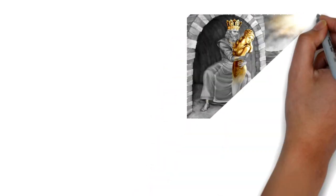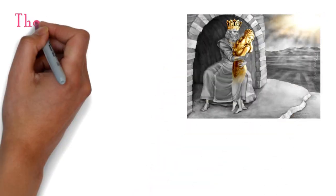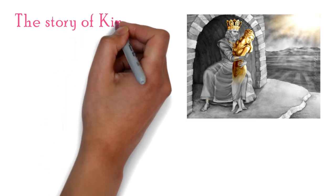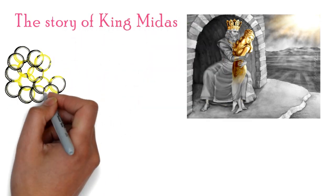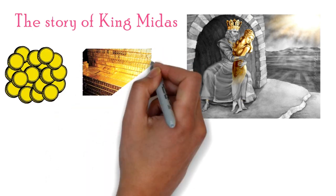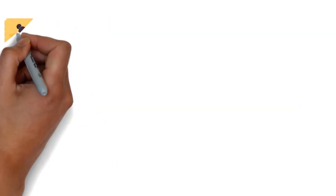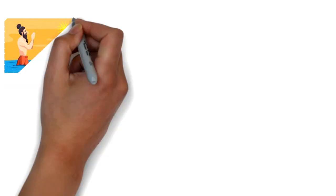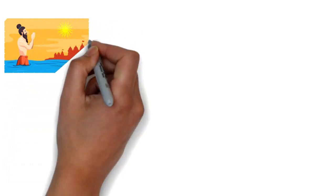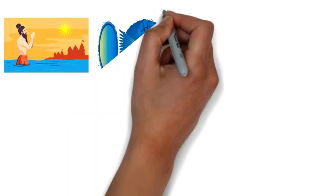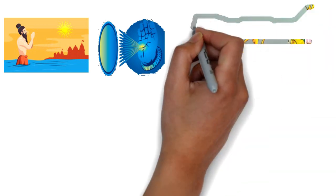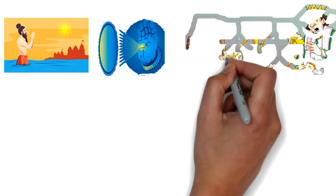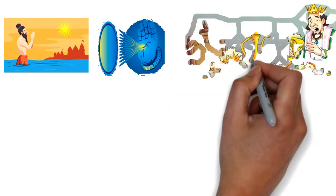We all know the story of the greedy king named Midas. He had a lot of gold, and the more he had, the more he wanted. Once, when God asked him to wish for anything he wanted, he wished that anything he touched be changed to gold. His wish was granted. He touched the bed, his clothes, and everything turns to gold.